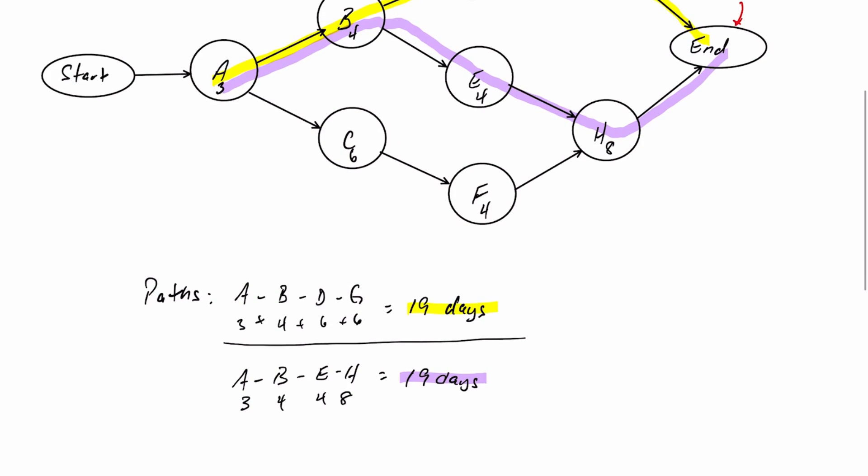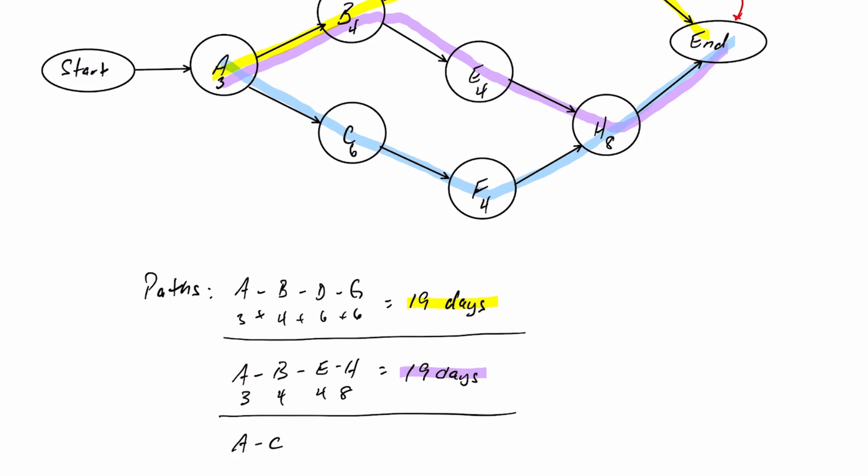Well, you can see that there's still one path left. A, C, F, H, end is the last path. A, C, F, H. And that's 3, 6, 4, and 8 for a total of 21 days.